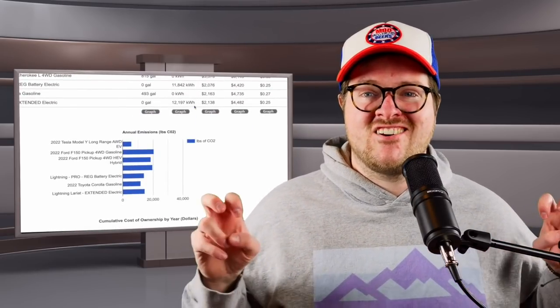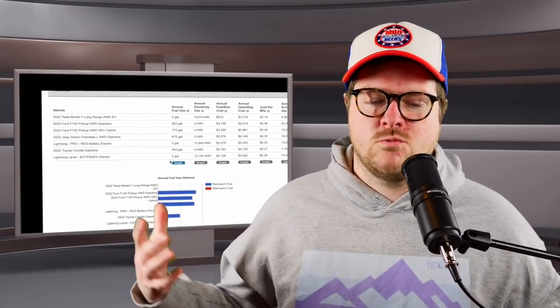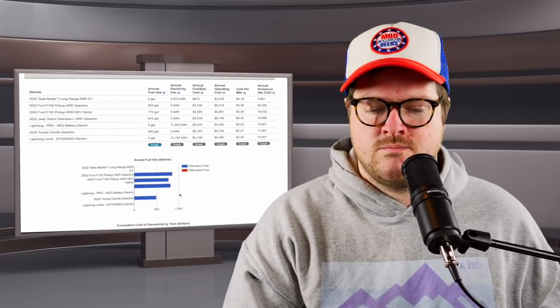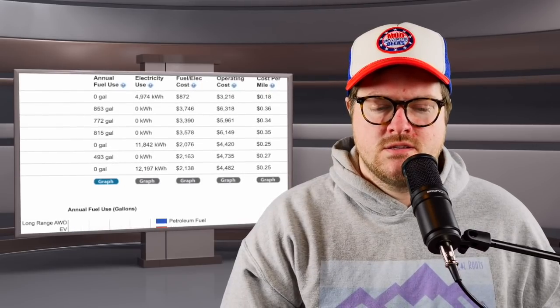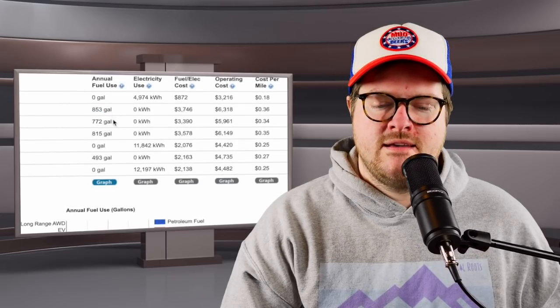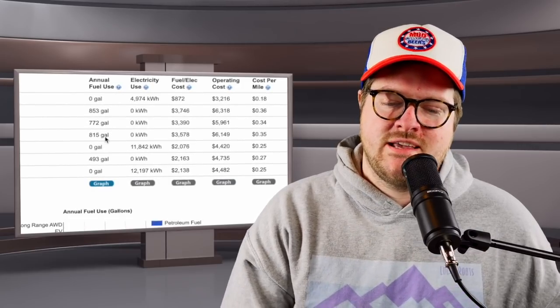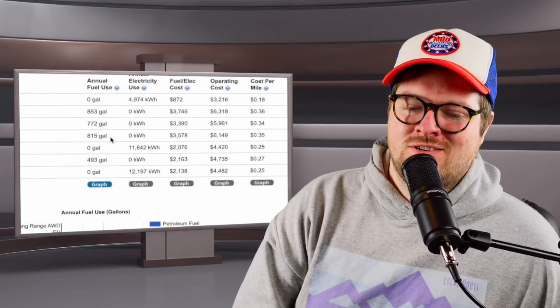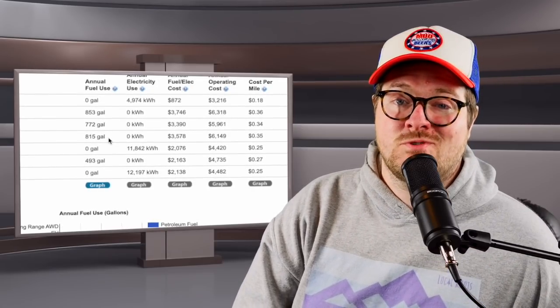All right, now let's look at some of the more cool nerdy stuff. What I have here is annual fuel use. This is weighing the hybrid versus the non-hybrid. We have the gasoline engine using 853 gallons per year and the hybrid using 772. And right here we have the Grand Cherokee just being a tank. It's almost as bad as a truck, 815 gallons a year. And then the Corolla, God love it, that's under 500 gallons per year you're using.